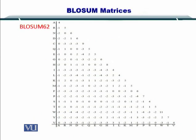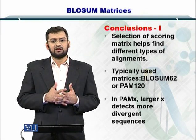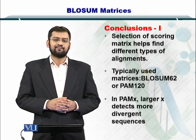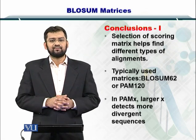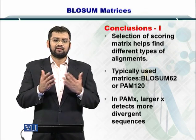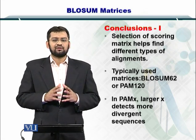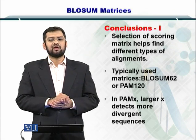The BLOSSOM 62 matrix — where 62 represents 62% similarity — is computed and shown here. In conclusion, the choice of scoring matrices can help you align protein sequences in very specific ways. BLOSSOM 62 and PAM 120 are frequently used. BLOSSOM 62 is better than BLOSSOM 50 or BLOSSOM 70 for general use. You can compute BLOSSOM 1, 2, 3, 4, up to 99, but the sequence alignment community has found that BLOSSOM 62 has the resolution to better compare and score protein sequences.